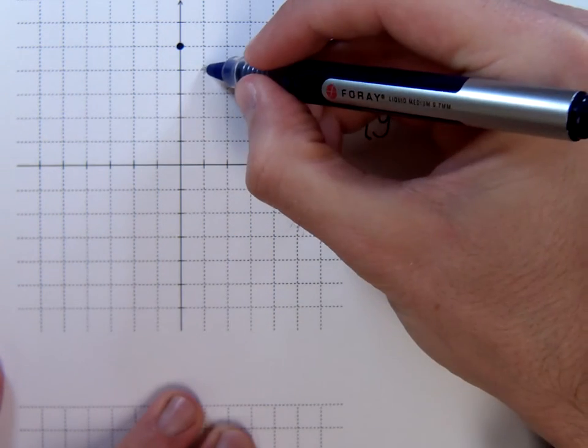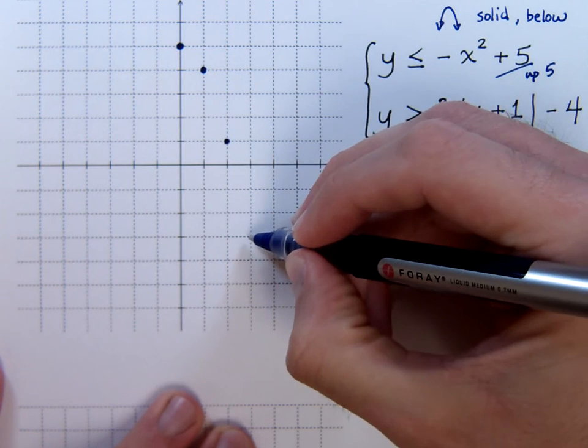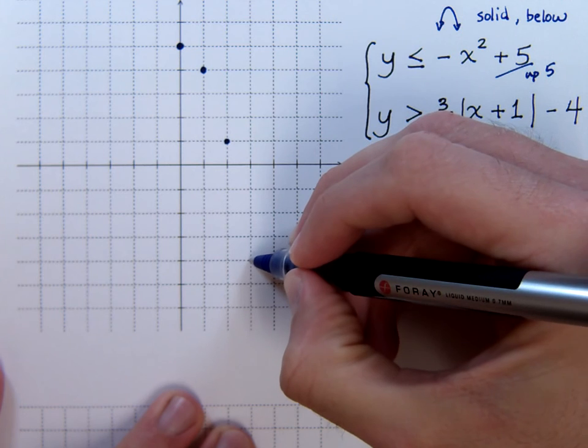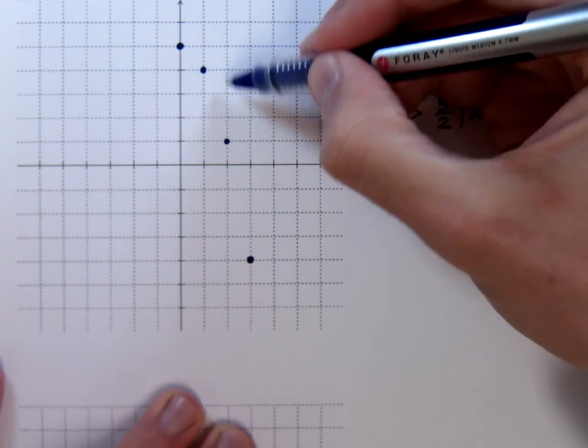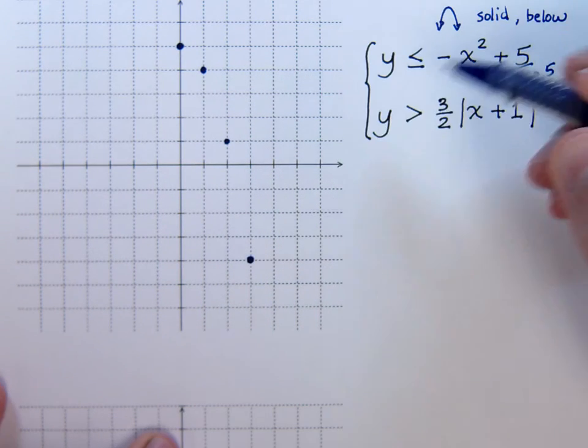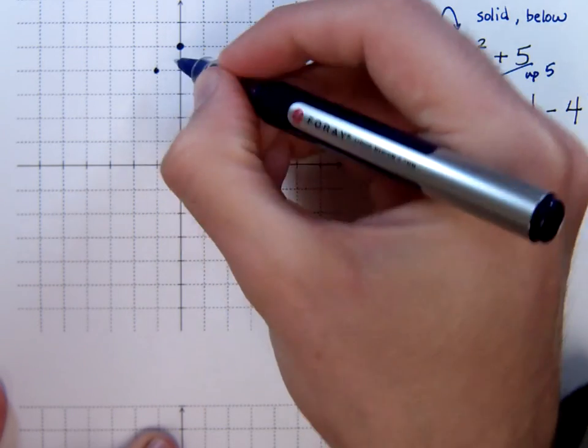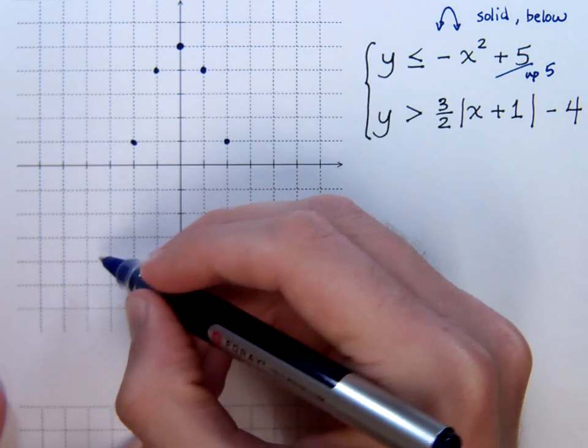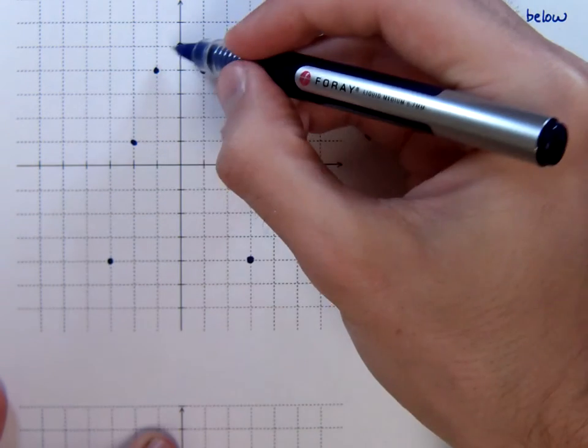So remember those key points for the parabola: 1, 1; 2, 4; and 3, 9. I'm going down because of the negative in front of this guy. Just reflect these points across the axis of symmetry and draw your line, or draw your curve.